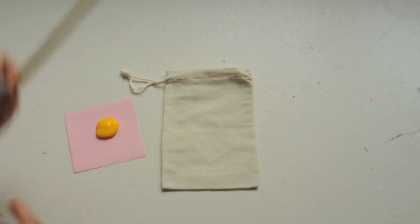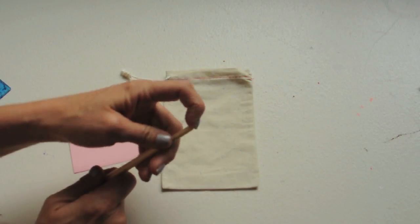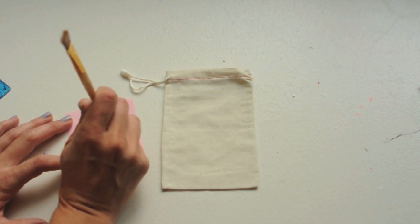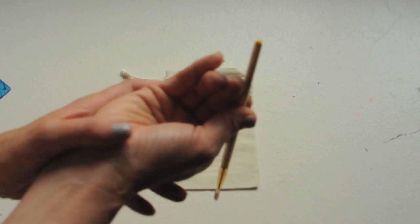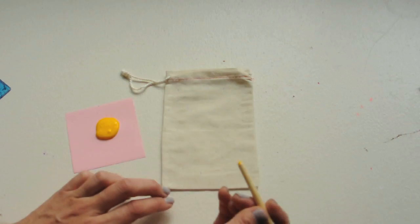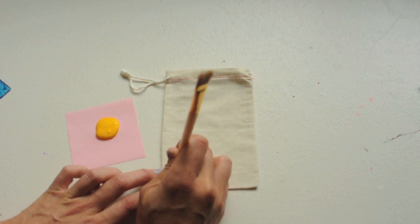Either with an eraser, the end of a pencil and an eraser, or I'm just using this paint brush because I like the shape on it. You just put a little bit of paint on the end of your paint brush, and then you just put it right on the dot.